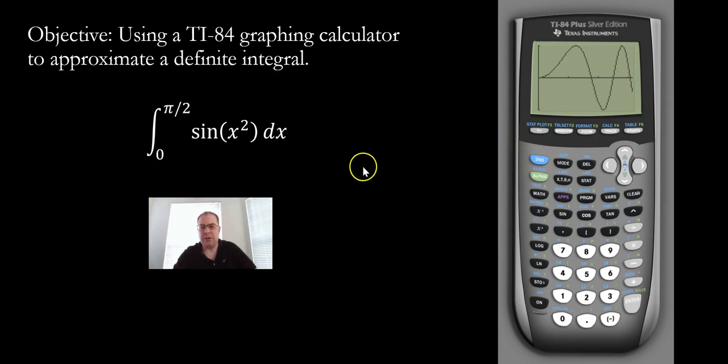All right. So from here, we can go to second, click on second, and then calculate. So to get that second trace. So second trace will access the calculator menu. And then if you notice here, there's the integral of the function. So you can either scroll down, or you can just click on the number. So in this case, I'm going to go ahead and click on seven.